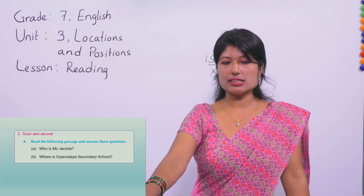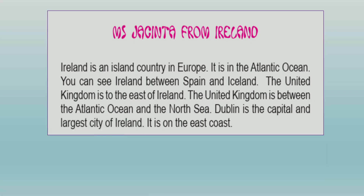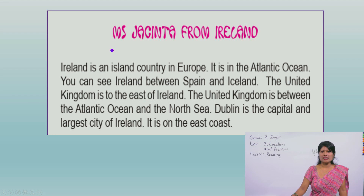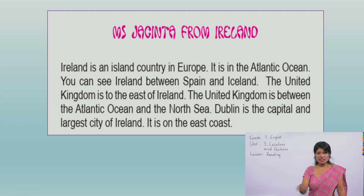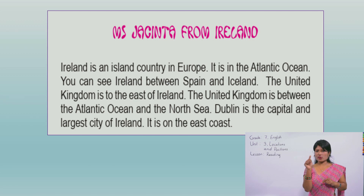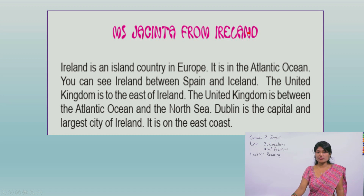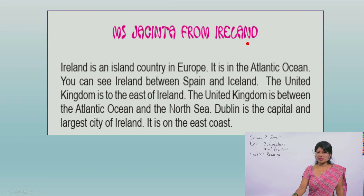Now let's read this text. What is the title? 'Miss Jacinta from Ireland.' Yes - Ireland! We marked it on the map, remember? We circled it - it was nearby United Kingdom. So this must be about Miss Jacinta who is from Ireland. That means we already found the answer to the first question - Miss Jacinta is Irish, she is from Ireland.